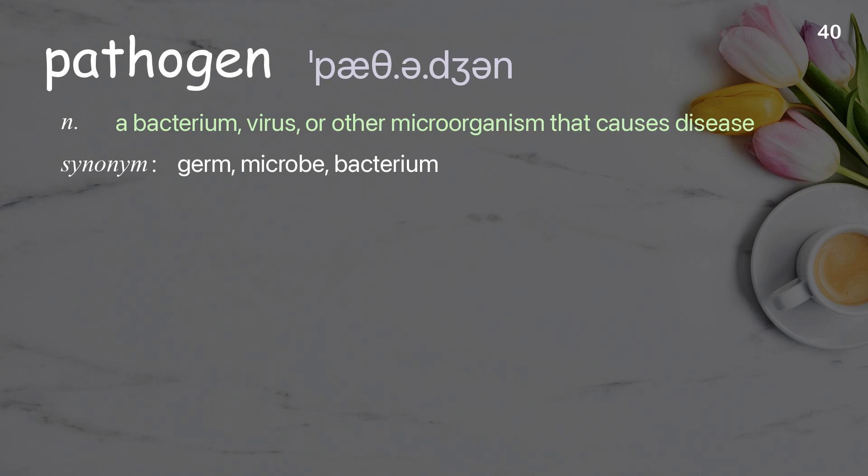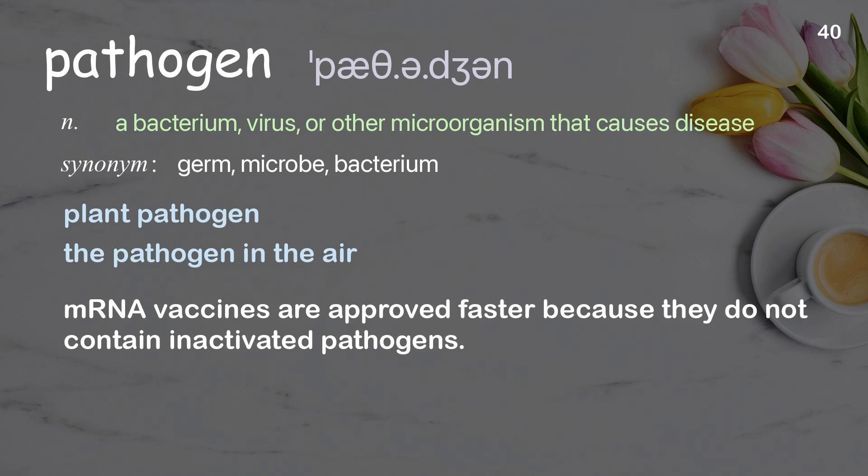Pathogen: a bacterium, virus, or other microorganism that causes disease. Examples: plant pathogen, the pathogen in the air. mRNA vaccines are approved faster because they do not contain inactivated pathogens.